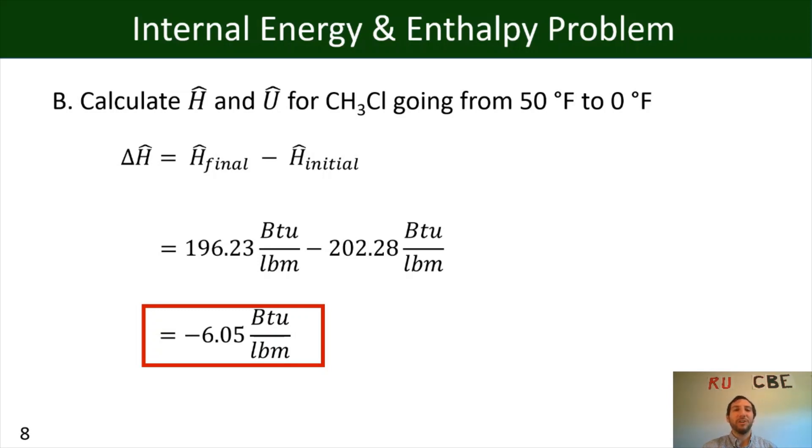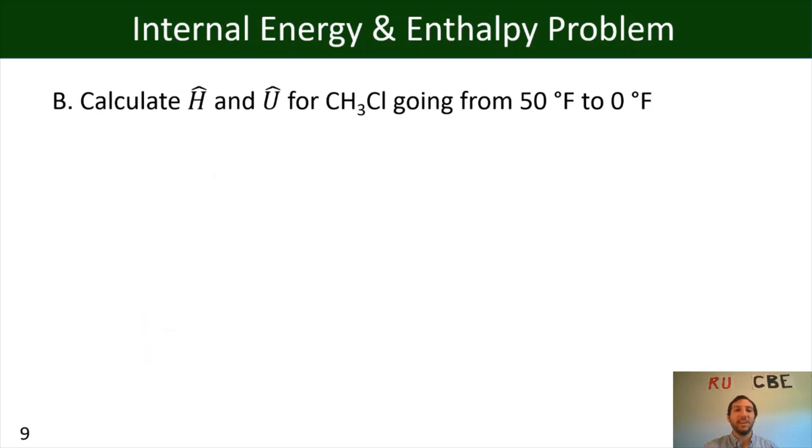Okay, so we've now solved for our specific enthalpy. The next thing we've got to look for is our change in specific internal energy. So in this case, our change in specific internal energy, we'll say is the change in specific enthalpy minus the change in our flow work. So delta P times V hat, right? Where that will turn into minus P final, V final, minus P initial, V initial.